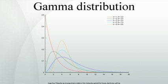The parameterization with k and theta appears to be more common in econometrics and certain other applied fields, where for example the gamma distribution is frequently used to model waiting times. For instance, in life testing, the waiting time until death is a random variable that is frequently modeled with a gamma distribution.